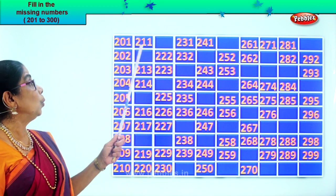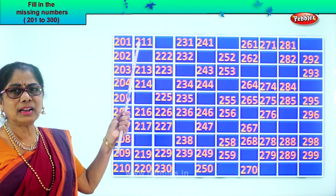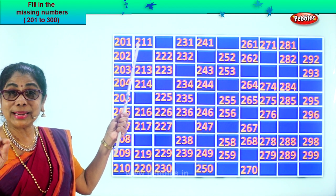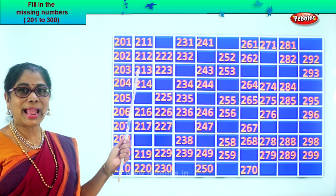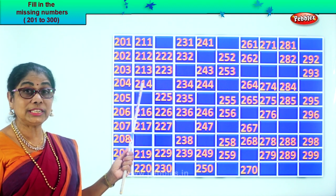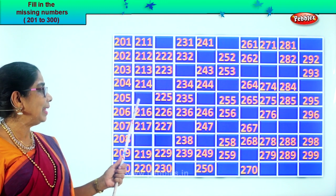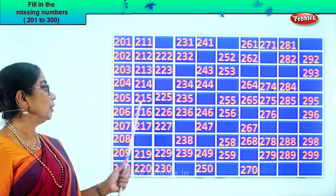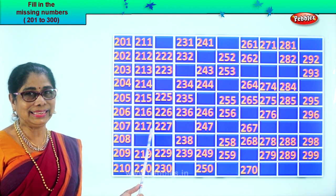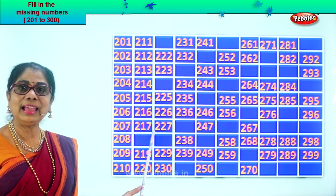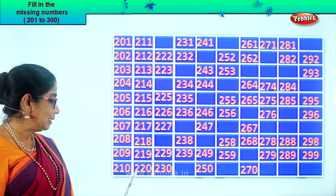After two hundred and ten, we have two hundred and eleven. After eleven — twelve. After fourteen — fifteen. Two hundred and fifteen. Two hundred and sixteen. Two hundred and seventeen. After seventeen — eighteen. So you write two hundred and eighteen. Two hundred and nineteen. Two hundred and twenty.